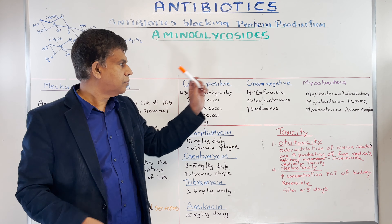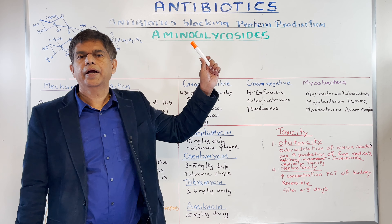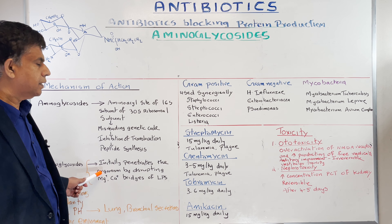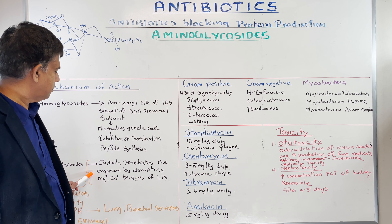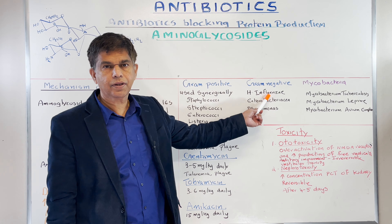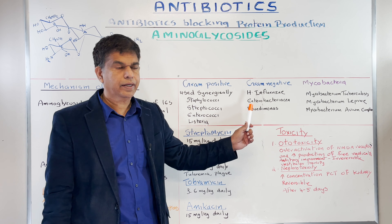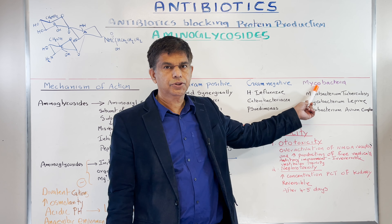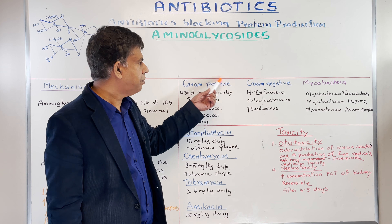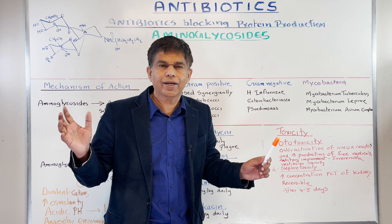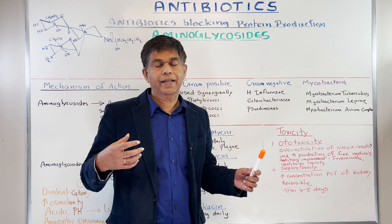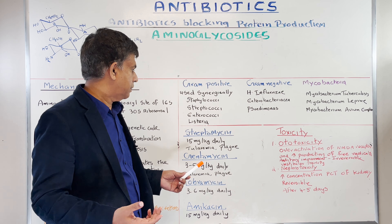Next, let's look at the coverage. Focus on gram-negative — aerobic gram-negative — because the anaerobic environment doesn't allow the antibiotic to penetrate the organism. So you have gram-negative coverage. Aminoglycosides also have good mycobacterial coverage, especially Mycobacterium tuberculosis and Mycobacterium avium. Gram-positive coverage is not very good, so you have to use them with another drug in what we call synergistic activity — combined with another group of antibiotics.